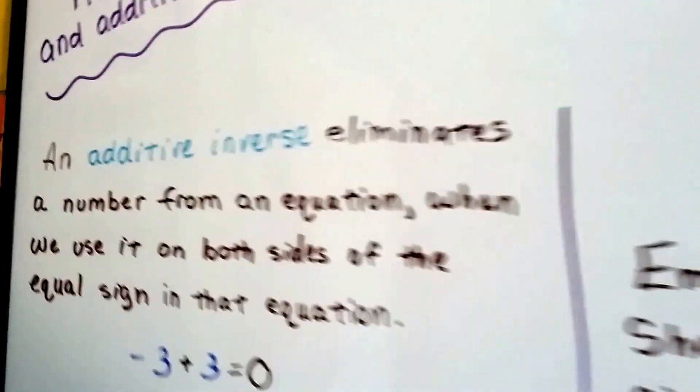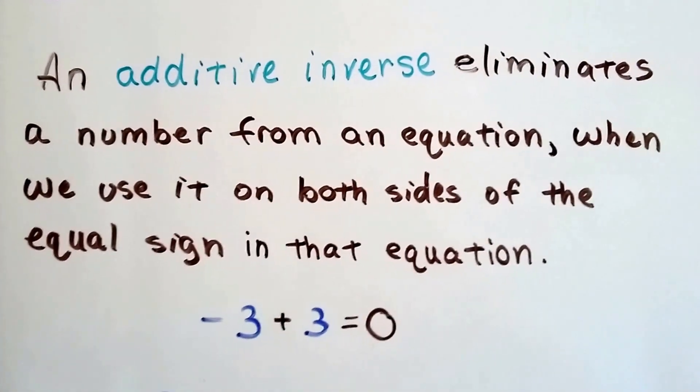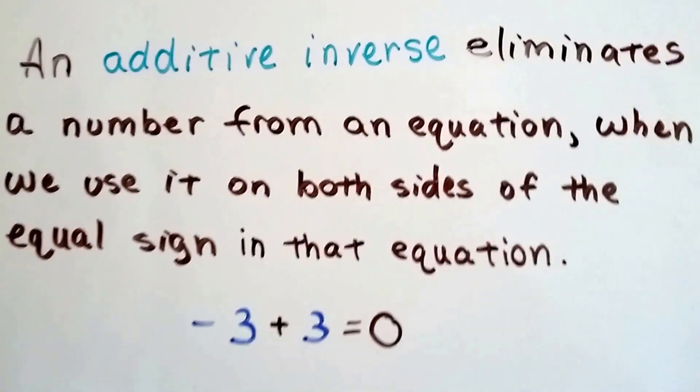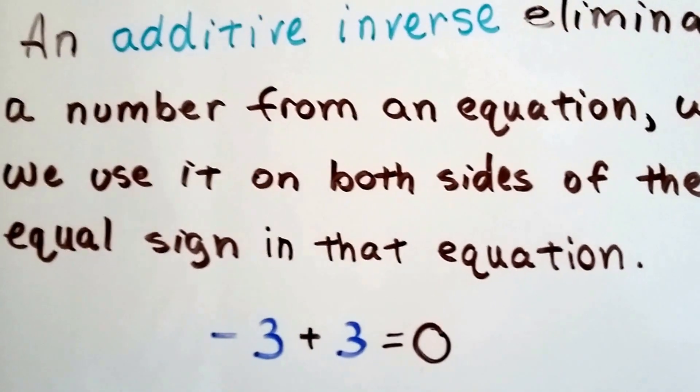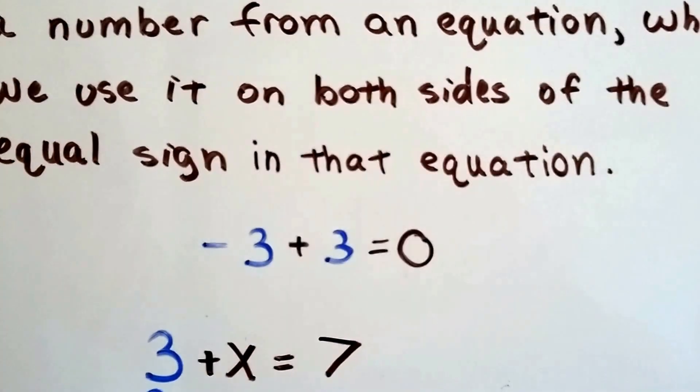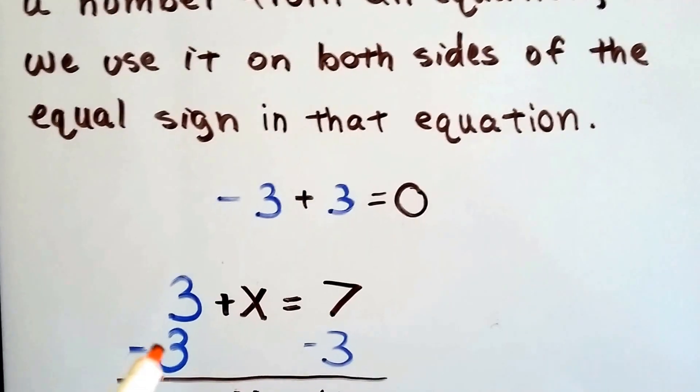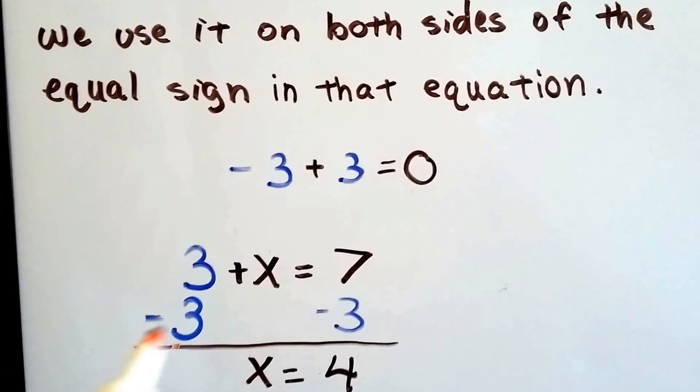An additive inverse eliminates a number from an equation when we use it on both sides of the equal sign in that equation. Negative 3 plus 3 equals zero. But what if we had 3 plus x equals 7, and we needed to find out what x was? We could subtract 3 from each side of the equation.